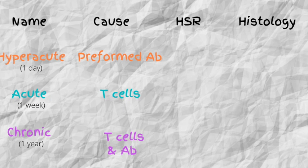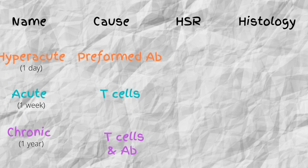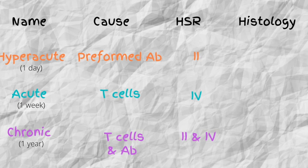To understand transplant rejections, you need to know the types of hypersensitivity reactions. Just remember the numbers 2 and 4: hyper-acute is a type 2 hypersensitivity reaction, acute is a type 4 hypersensitivity reaction, and chronic — being a mix of the two — has both type 2 and type 4 hypersensitivity reactions.